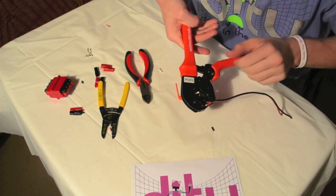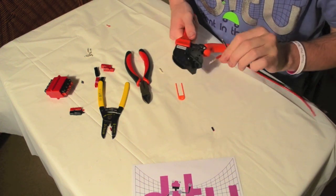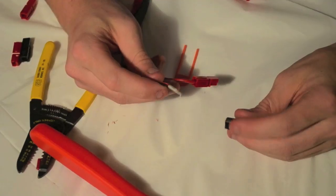Once again, make sure that the flat tab of your Anderson connector is properly inserted into the black box before crimping.